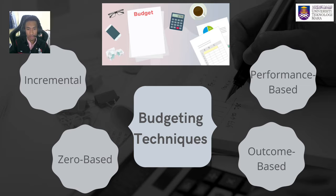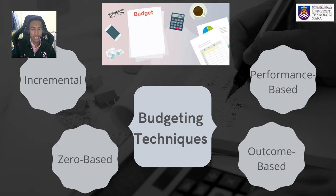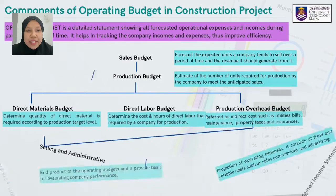Performance-based budgeting reflects the resources and output of services for each unit of an organization, based on evaluation of the productivity of different operations. The operations that contribute the most to profitability receive a larger share of the budget. Outcome budget is a budget based on the relationship between funding and expected results — the most likely result-oriented type of budgeting technique.